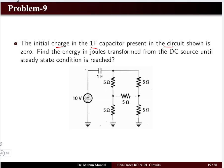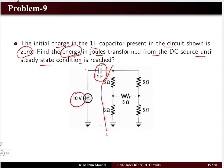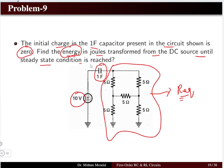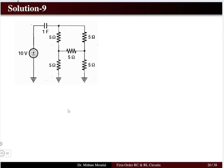Problem 9: a 1 farad capacitor has zero initial charge. We have a 10 volt DC source and several resistors. Find the energy transformed from the DC source until steady state. The challenge is to determine the equivalent resistance of the resistor network, where simple series-parallel combinations do not apply directly.